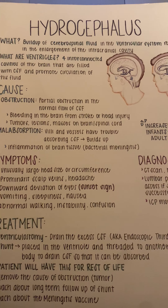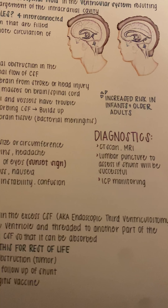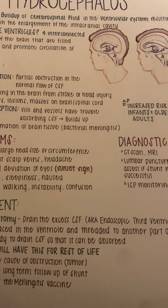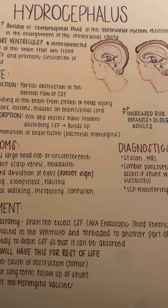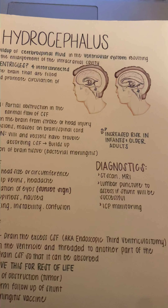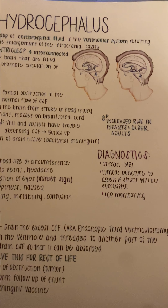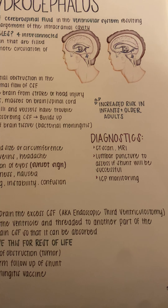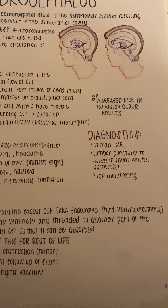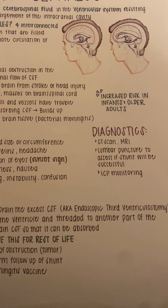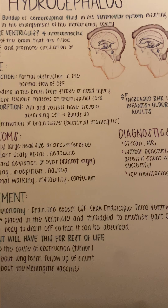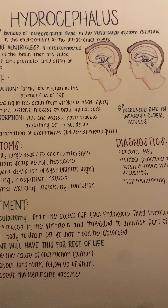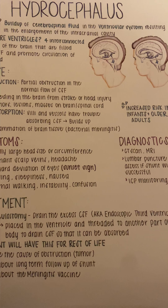Once you have identified that a patient has hydrocephalus, you can go to step three, which is prioritizing your hypothesis — that's establishing your priorities of care. For a patient with this condition, some of the priorities would be to get a CT scan, MRI, and lumbar puncture to assess if a shunt will be successful, and then ICP monitoring to monitor intracranial pressure and ensure there's not a significant increase.